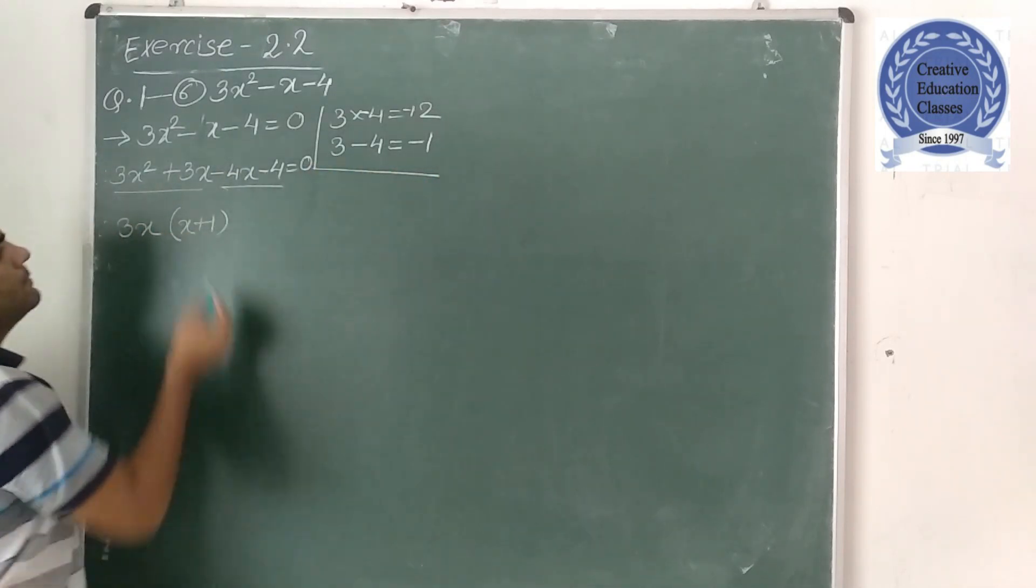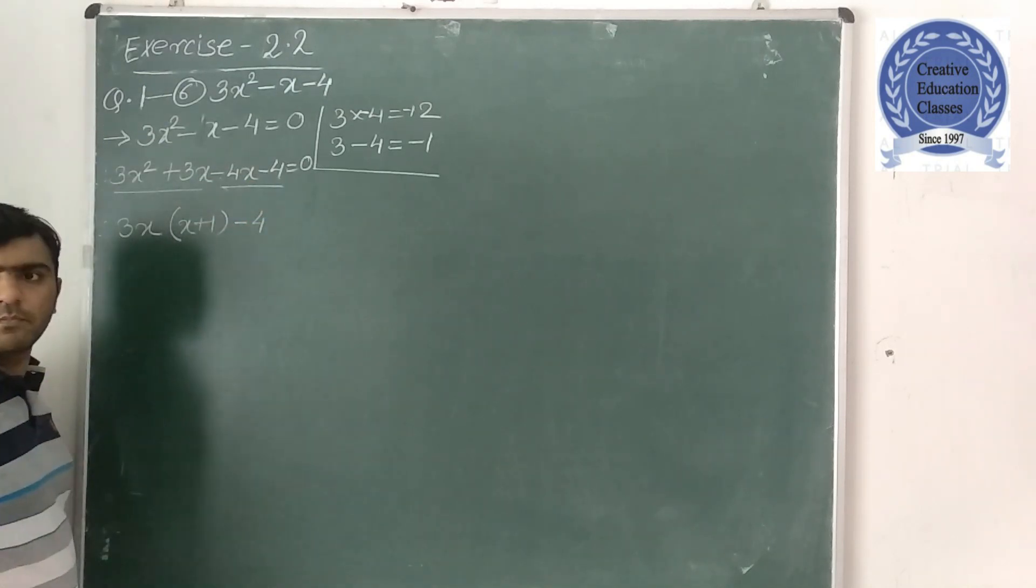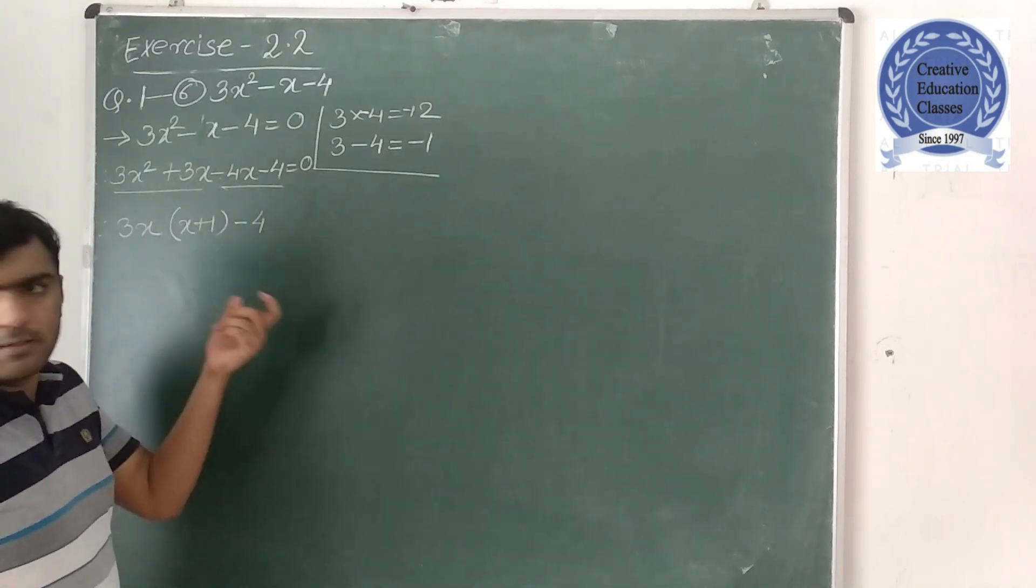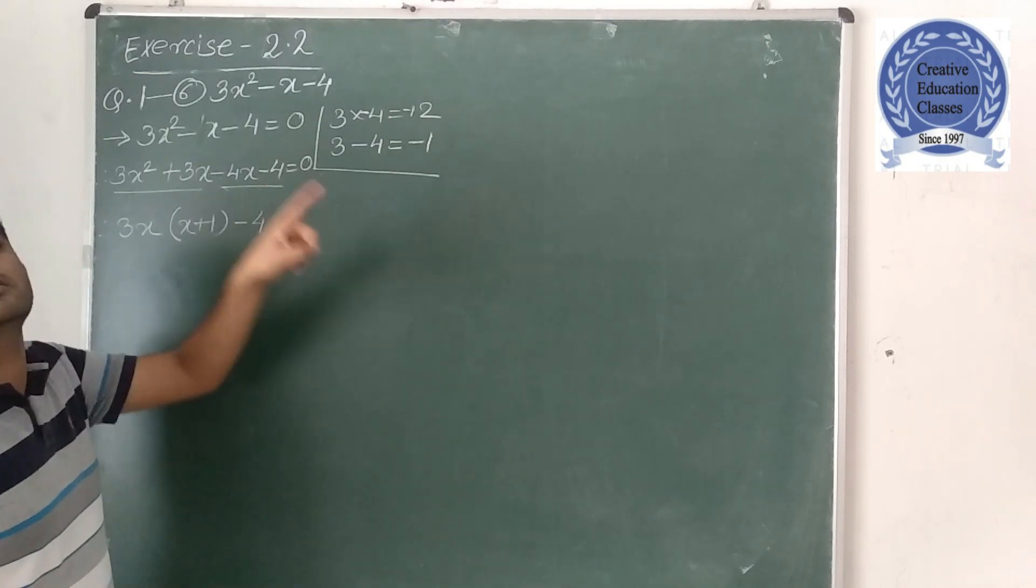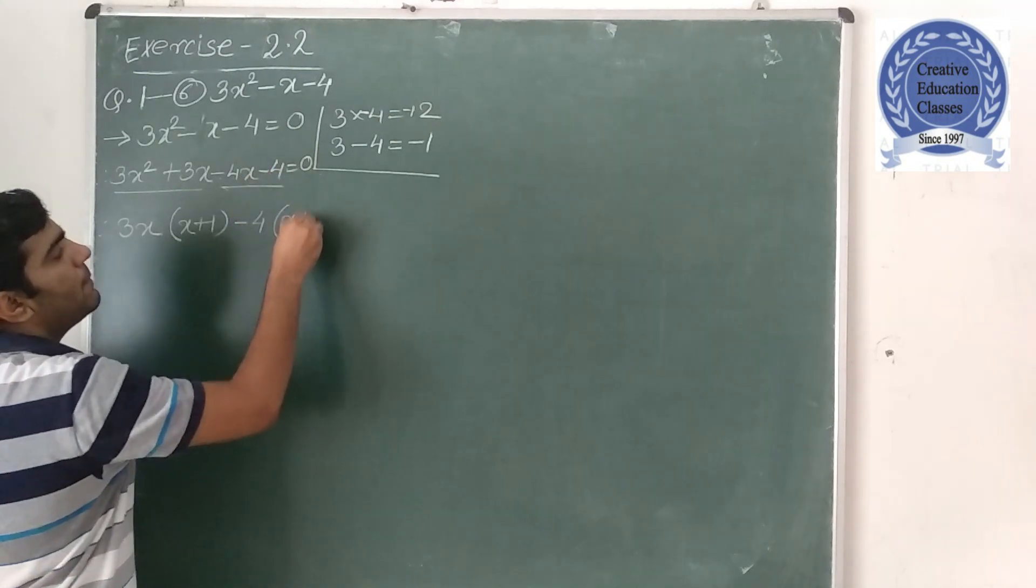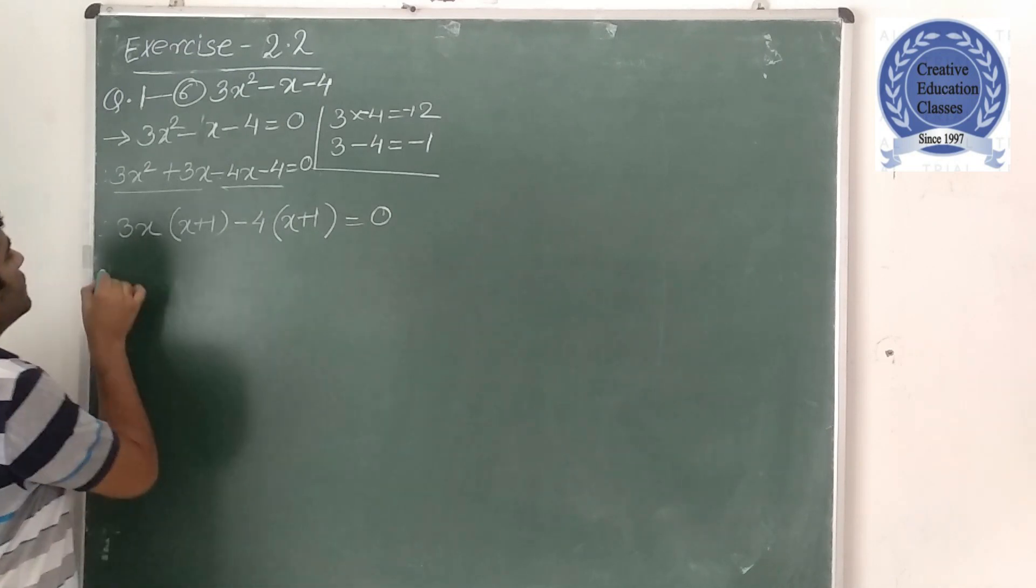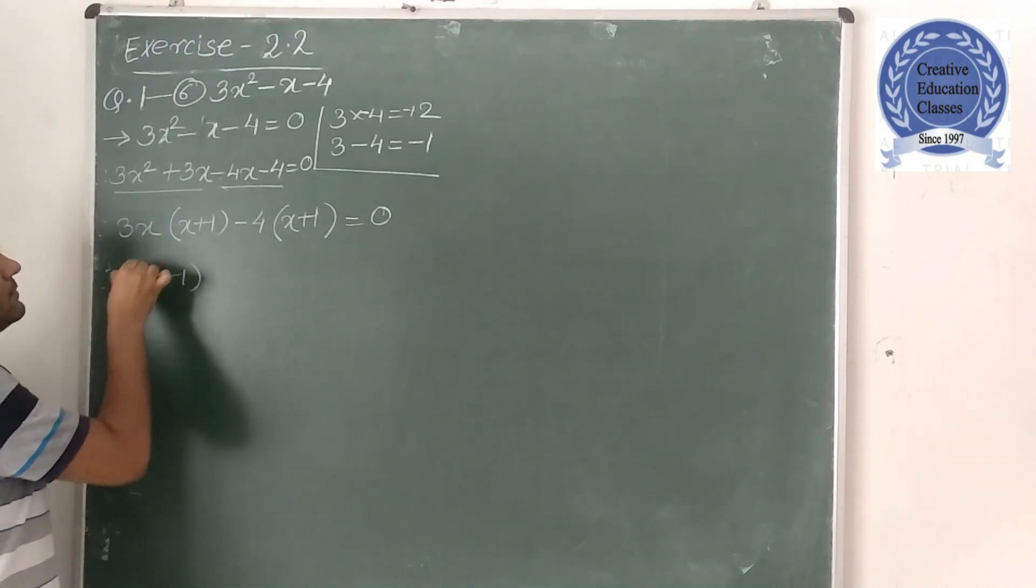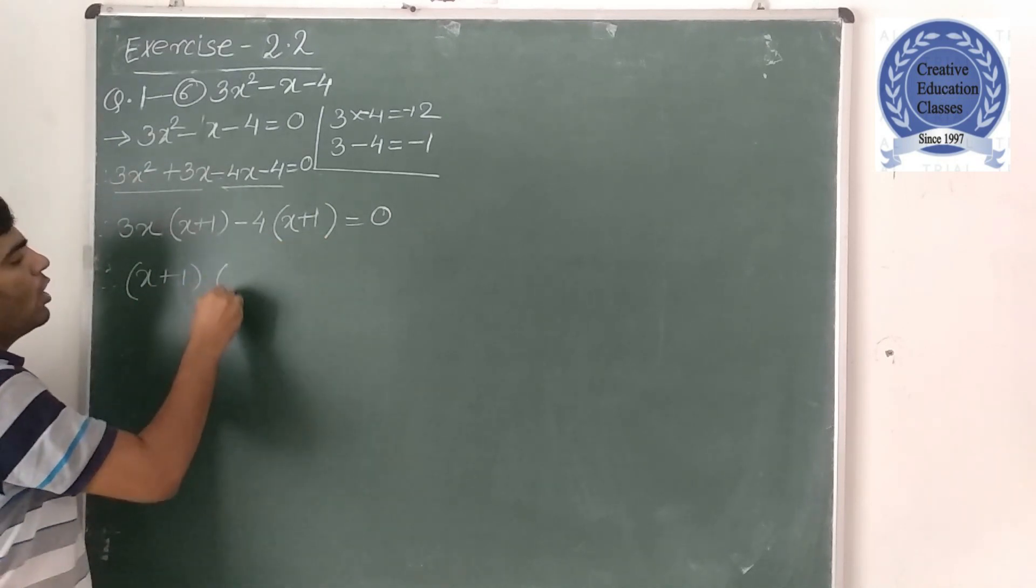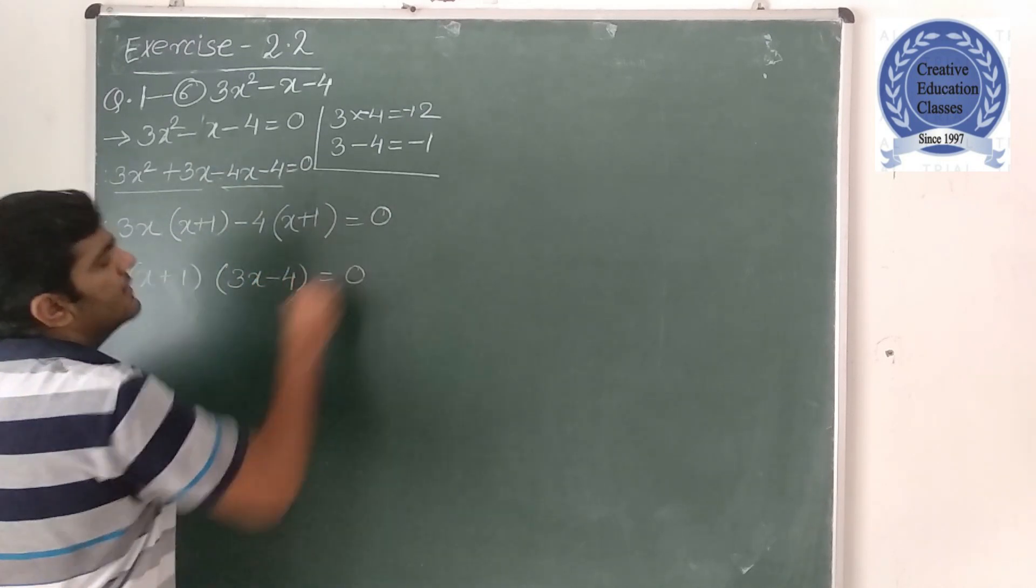Okay, now minus 4 common. Now I have said in last video that if I change the bracket with minus 1, then I will change. So x plus 1 is equal to 0. So what do I do? Therefore, x plus 1 is equal to 0 or 3x minus 4 is equal to 0.